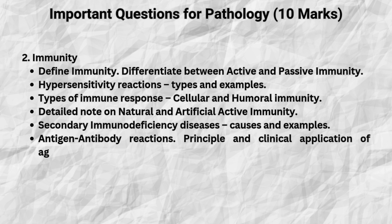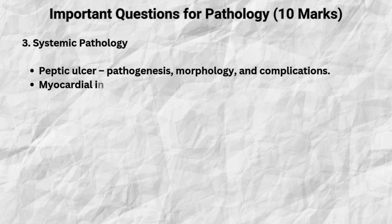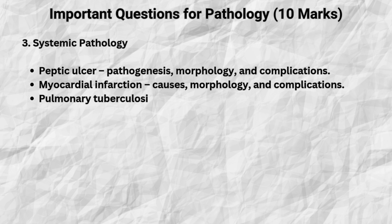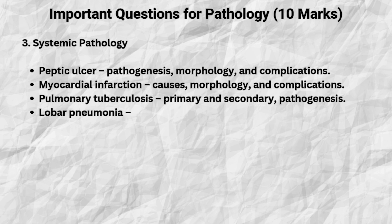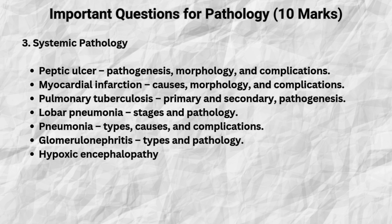Next is systemic pathology. Here's a list of commonly asked 10 mark questions. Peptic ulcer — pathogenesis, morphology and complications. Myocardial infarction — causes and morphology. Pulmonary tuberculosis — primary and secondary forms. Lobar pneumonia — stages and pathology. Pneumonia — types and complications. Glomerulonephritis — types and pathology.